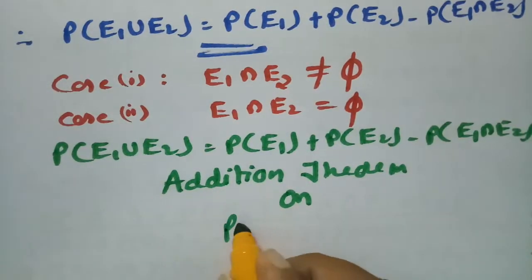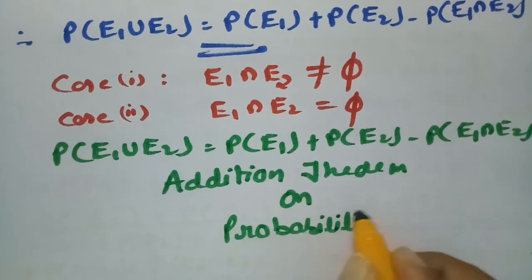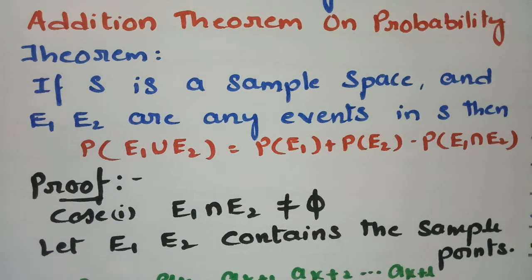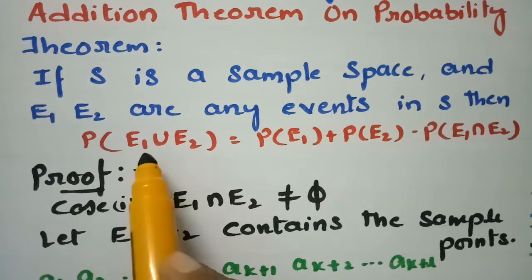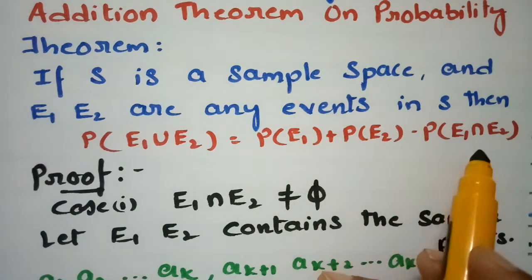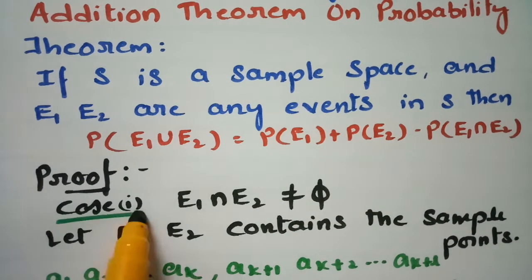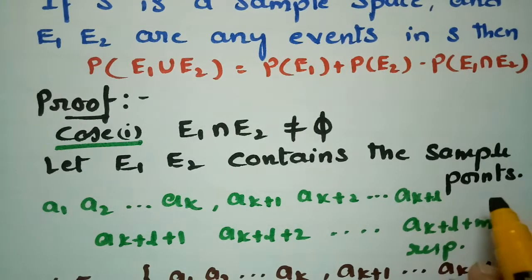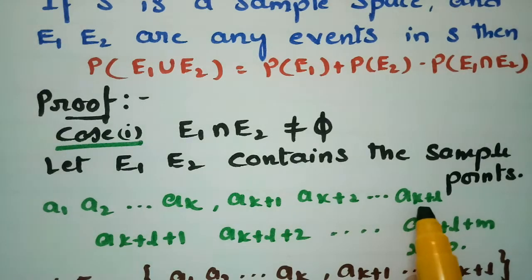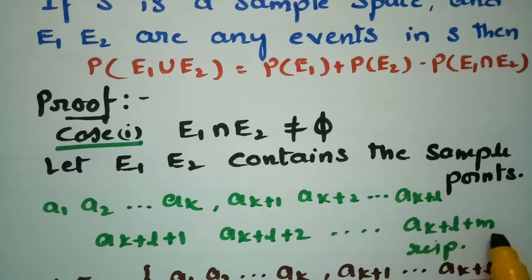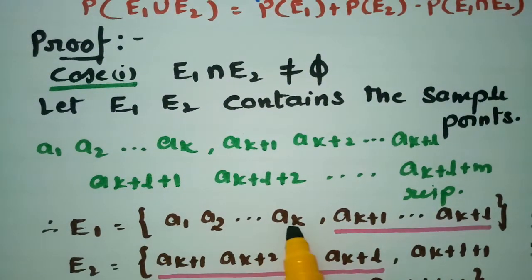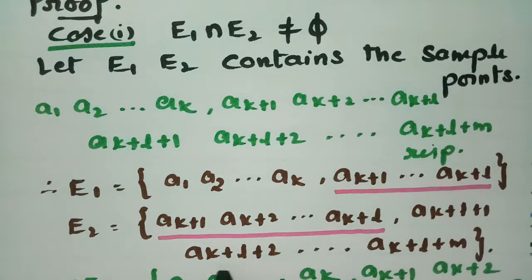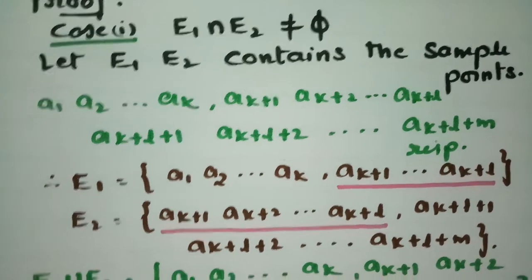This is the Addition Theorem on Probability. To summarize: let S be a sample space and E1, E2 be any two events in S. We need to show that P(E1 ∪ E2) = P(E1) + P(E2) - P(E1 ∩ E2). For Case 1, E1 ∩ E2 is non-empty, containing sample points A1, A2, ..., AK, AK+1, ..., AK+L, AK+L+1, ..., AK+L+M.